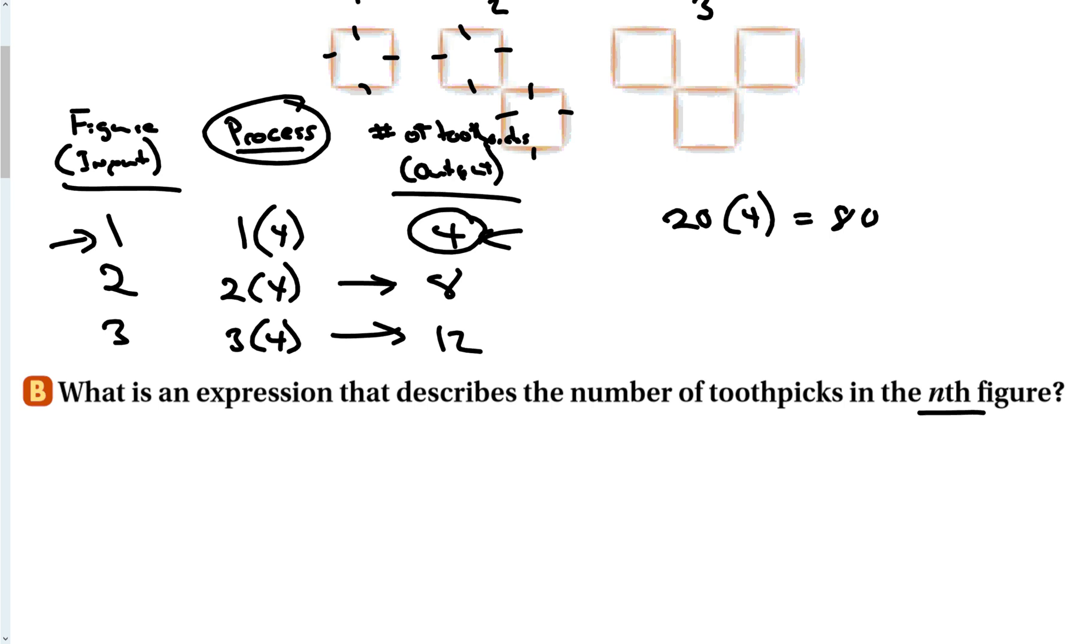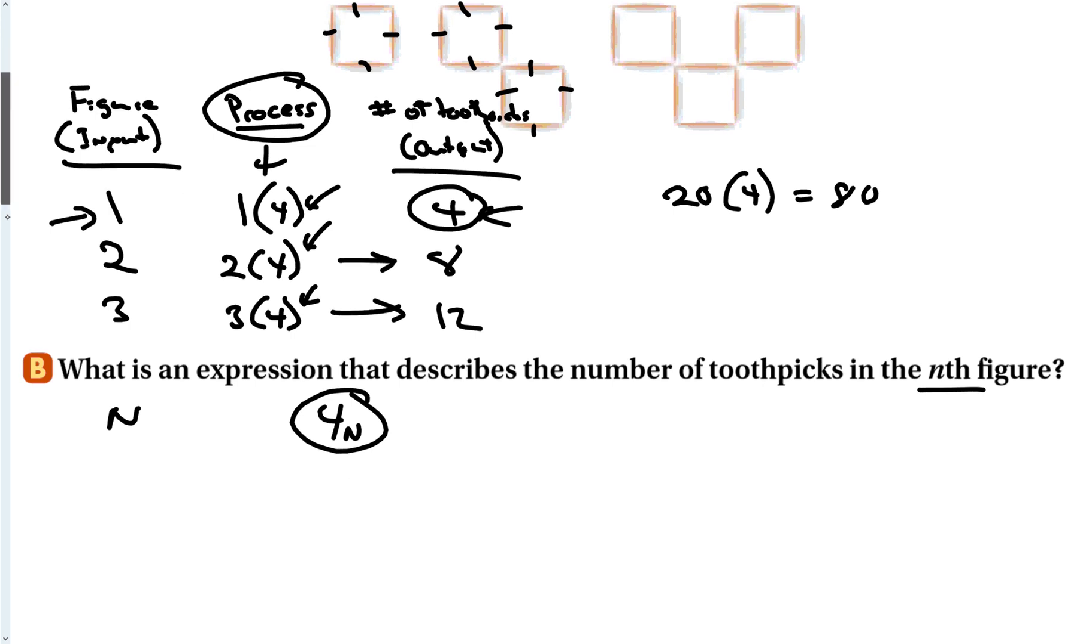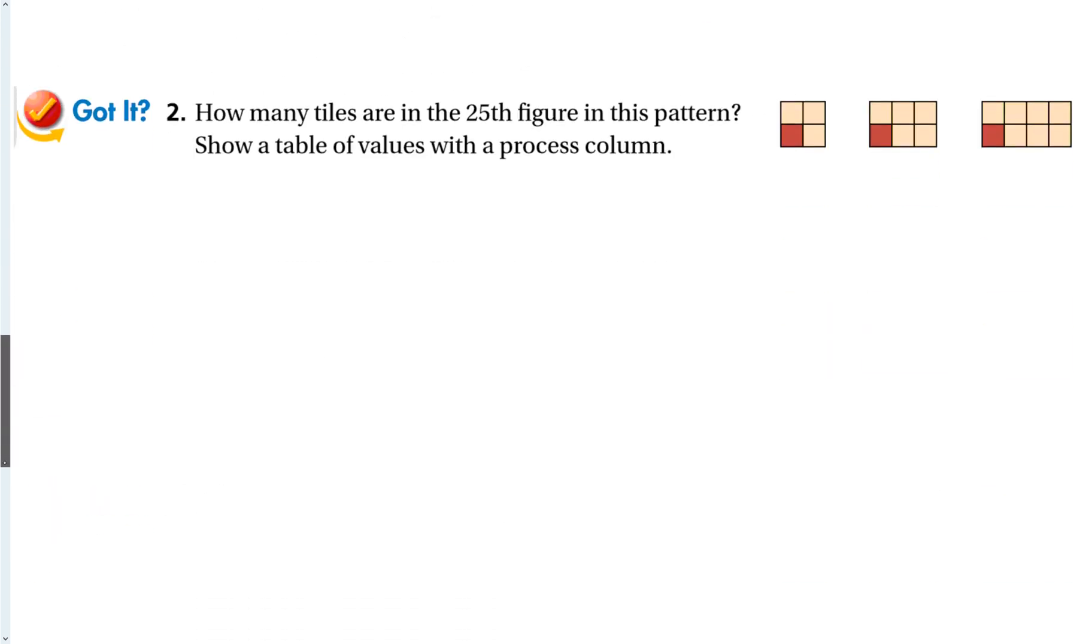Now let's write an expression for the nth figure. Okay. Well, once we have our process, right, if my figure is n, I know that I'm just taking whatever my input is and multiplying it by four. So the nth figure would just be four times n. And with that equation right there, I can figure out any figure that I want, any group of toothpicks, since I know I just take the number of the figure and I multiply it by four.